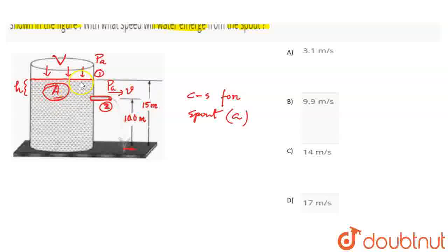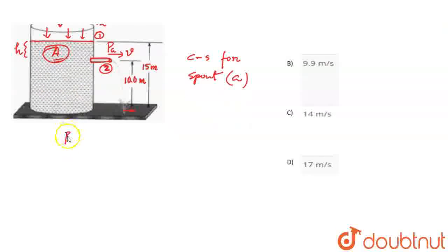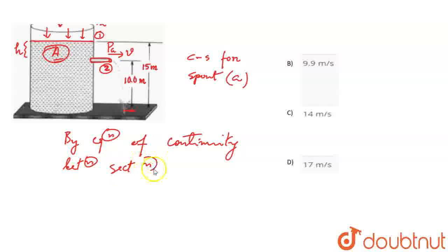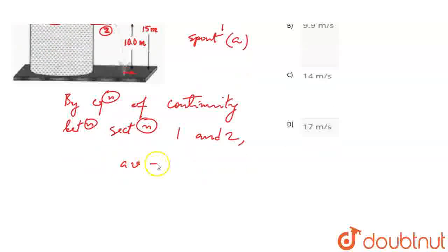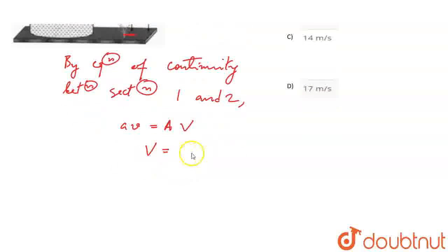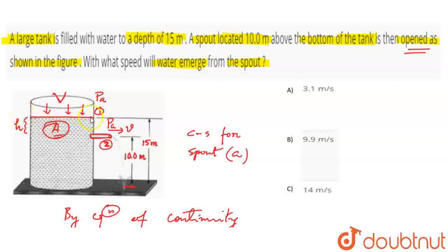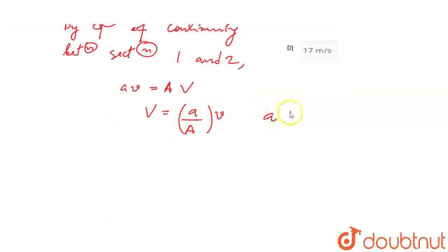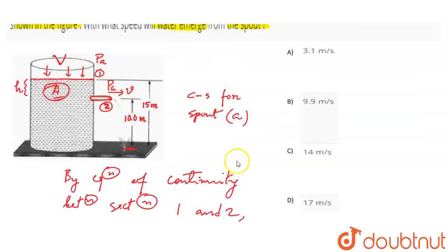Now by applying equation of continuity between section 1 and 2, we can say that small a into small v will be equal to capital A into capital V. Now we can see small a, the spout area, compared to the area of the tank cross section. Small a is very, very less than capital A, so V will be almost equal to 0.